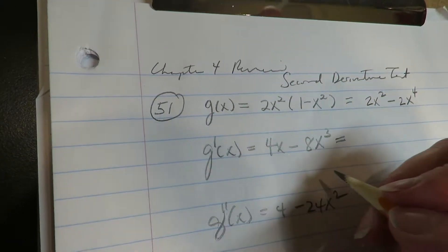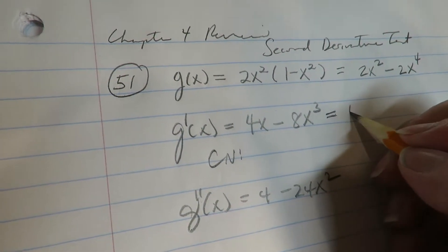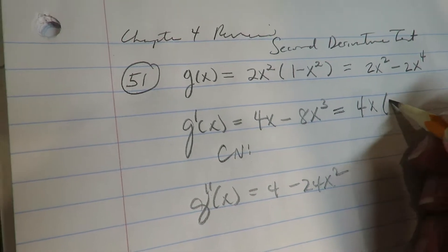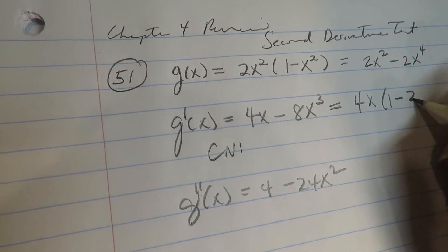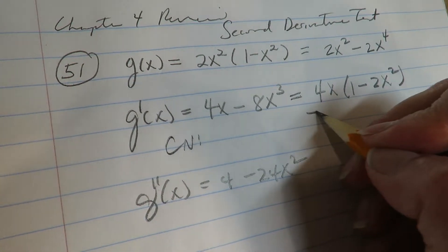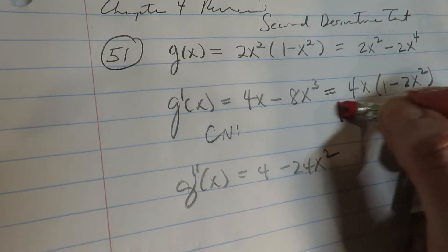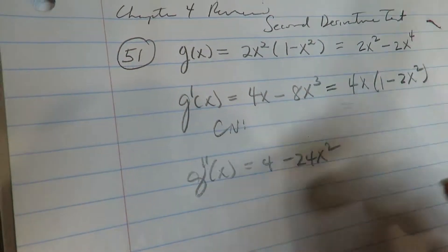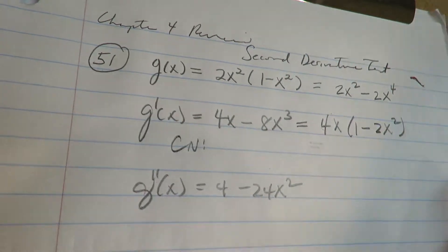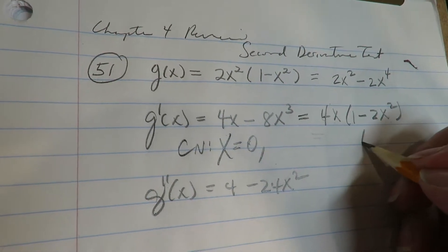for the second derivative test, you need the critical numbers. So I'm now going to factor this: 2x². That's not easy to factor. Okay, we're stuck solving it anyway. So we can see so far one of the critical numbers is going to be 0. We have to get these other two. All right, so we're going to